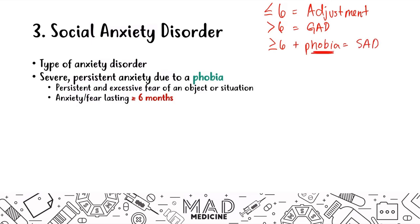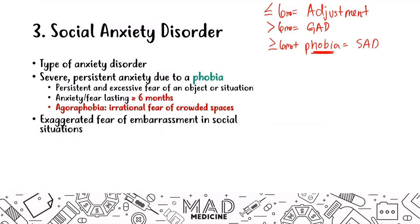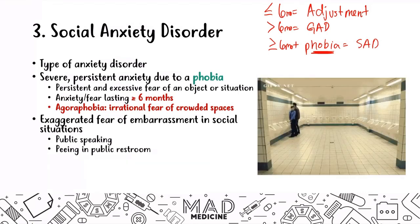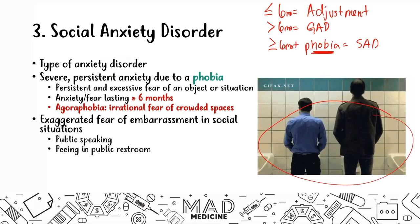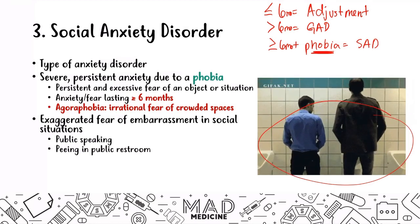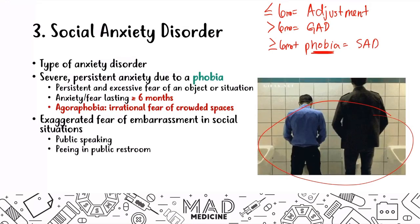This phobia specifically is going to be the fear of being in a very crowded place — so agoraphobia is the phobia we're dealing with. If they have agoraphobia lasting greater than or equal to six months, they're dealing with social anxiety disorder. In this disorder, patients have an exaggerated fear of embarrassment in social situations like public speaking or even using a public restroom. A lot of times these patients can end up becoming introverts — they stop leaving their house completely because of this phobia. It becomes so debilitating.